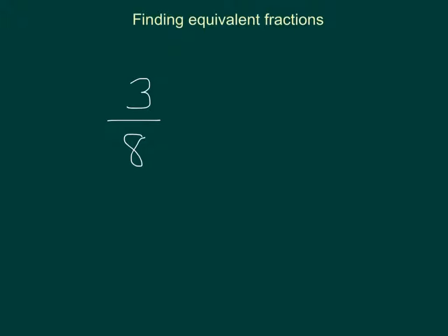Let's say we wanted to find an equivalent fraction to 3 eighths. You could multiply the numerator and the denominator by any number other than 0 and 1 to get a different fraction. Let's say we multiply it by 2. If we multiply the top and bottom by 2, then we get 6 over 16, which is an equivalent fraction to 3 over 8.